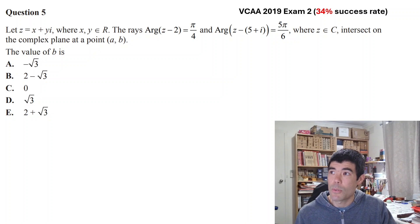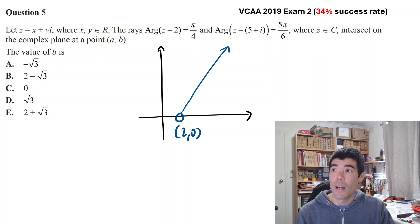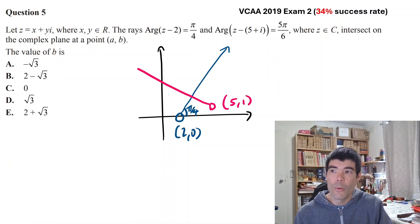This question was from 2019 exam 2, only 34% success, and it's about rays. So we have two rays and we're interested in the point where they intersect. So we're interested in these two rays and where they intersect. I think a diagram is probably a good idea for this question. So if we draw up arg(z-2) being π/4. So we have this ray going from the point (2,0) up to the right at an angle of π/4 from the x-axis. And the second one from the point (5,1) or 5 + i going at an angle of 5π/6. So from the positive x-axis, we're going to be going up to the left like that. We want to know where these two rays intersect, and particularly the y value, which is b.